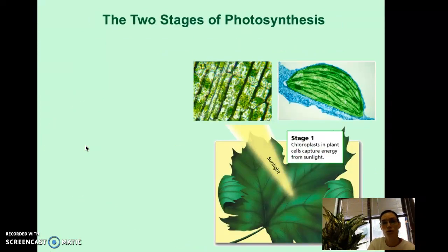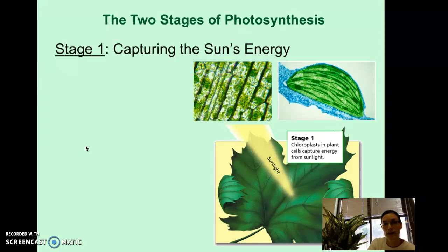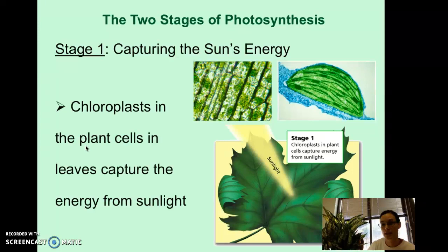Back to your note page. We have two stages of photosynthesis. Stage one is capturing the sun's energy. So how do these plants capture the sun's energy? The first thing that happens is that chloroplasts in the plant cells, in the leaves, capture energy from the sun. So you learned about chloroplasts last year. And so the sunlight is entering those leaves. And the cells in those leaves are capturing the energy.